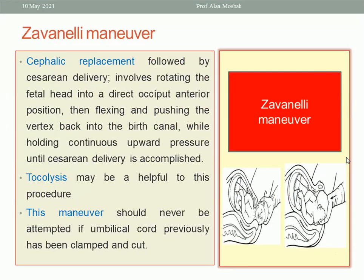If failed, there is another maneuver called the Zavanelli maneuver. Please look at this picture. You are trying to rotate the head in the reverse direction toward the occiput anterior, then increase flexion of the head, then push the head up and continue pushing the head inside the uterus — of course, when the uterus is relaxed, and you may need a tocolytic during this maneuver — then perform caesarean section. The Zavanelli maneuver means cephalic replacement followed by caesarean section.